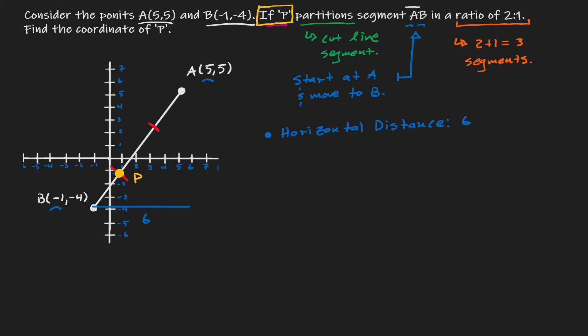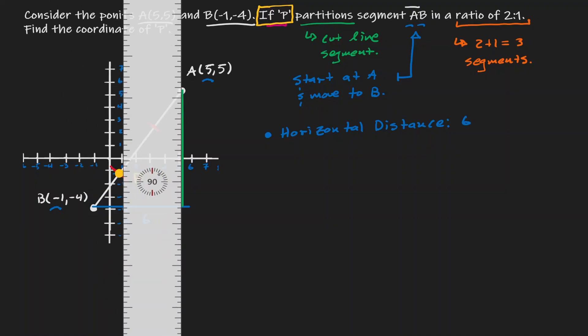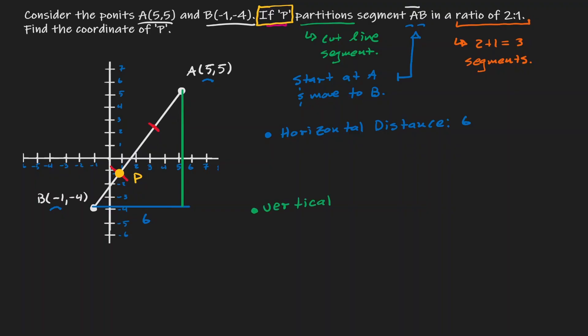Now let's consider the vertical distance. If we start at the y-value of negative 4 and go all the way up to the y-value of 5, we are traveling 9 units. Remembering that we cut this diagonal line into three equivalent pieces, let's do the same for the horizontal and the vertical. We have cut the horizontal into three equivalent pieces and we have cut the vertical into three equivalent pieces.